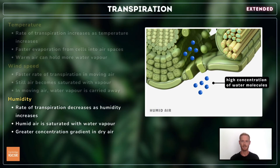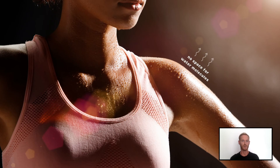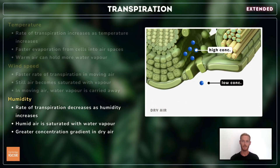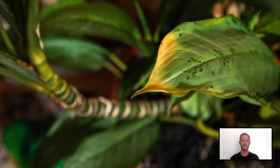Humid air is saturated with water vapour, meaning there's less space for the molecules in the leaf to diffuse into. This slows down the rate of transpiration, and is also why your sweat doesn't evaporate and cool you down as well in humid conditions. In dry air, there's a much greater difference between the concentration of water molecules inside and outside the leaf, which speeds up diffusion through the stomata.